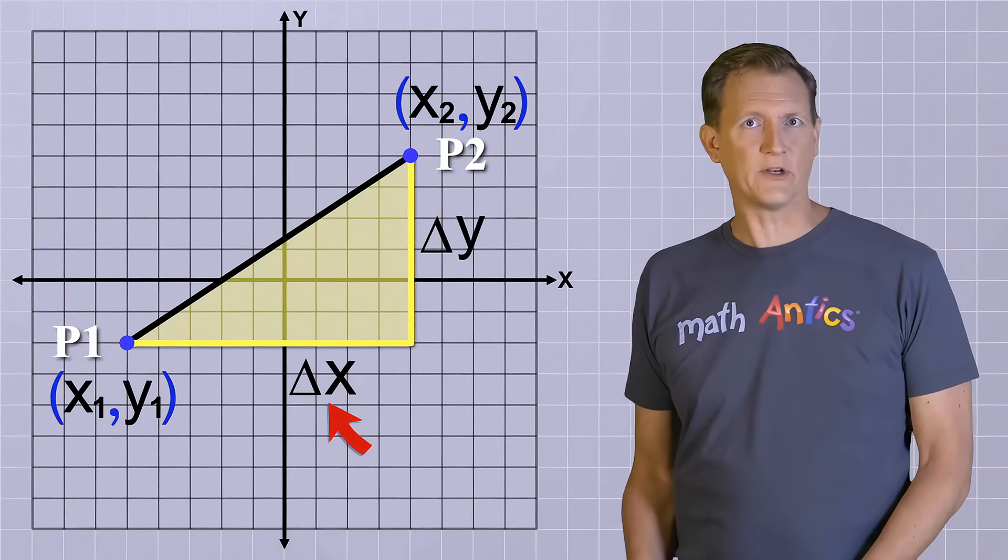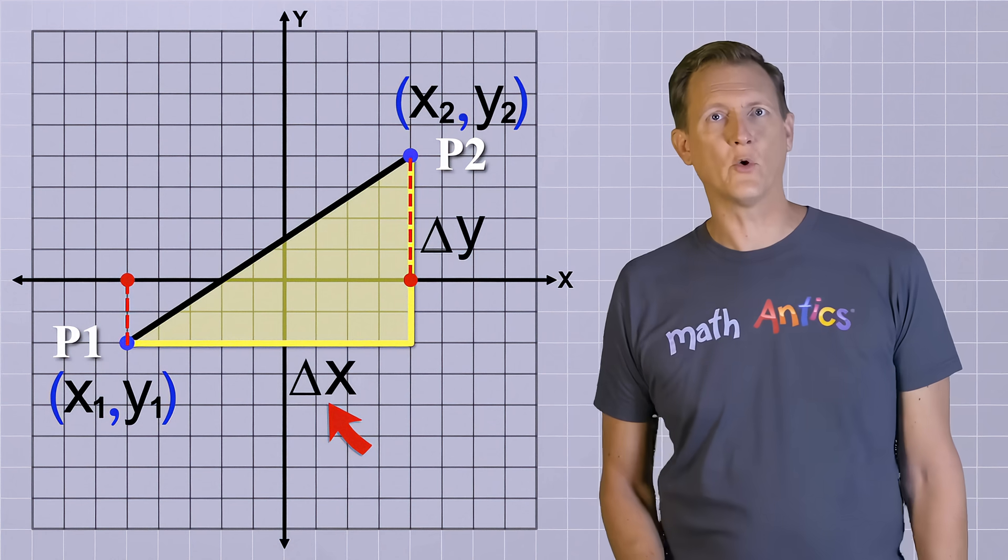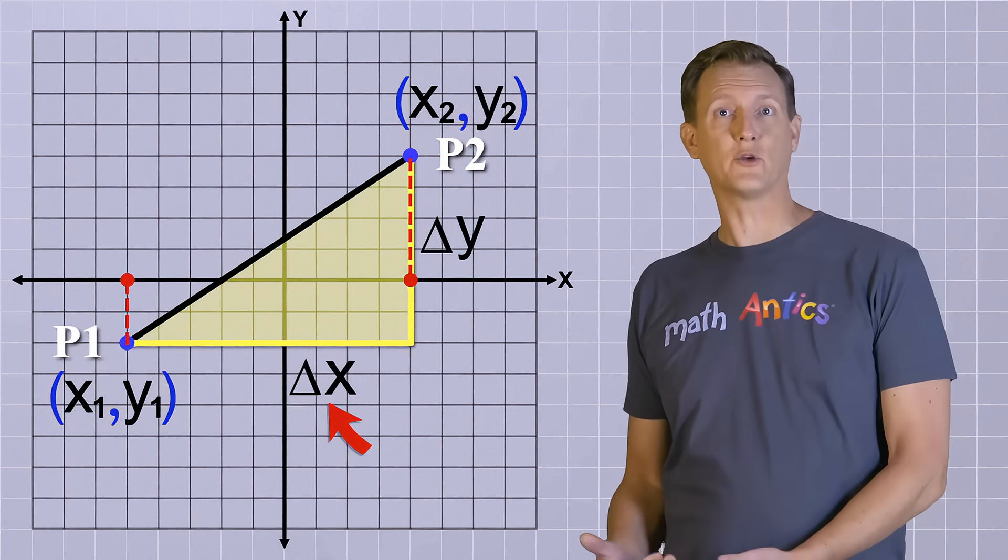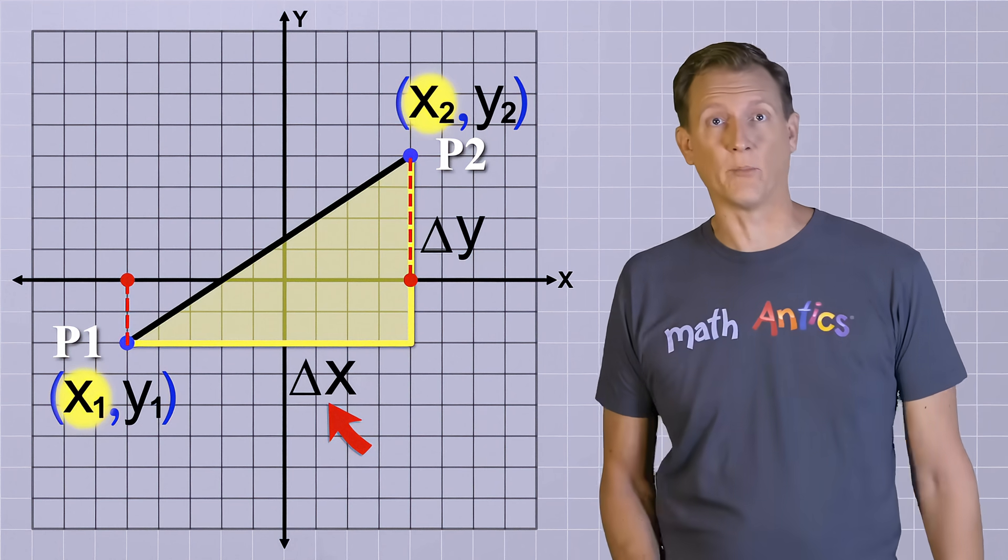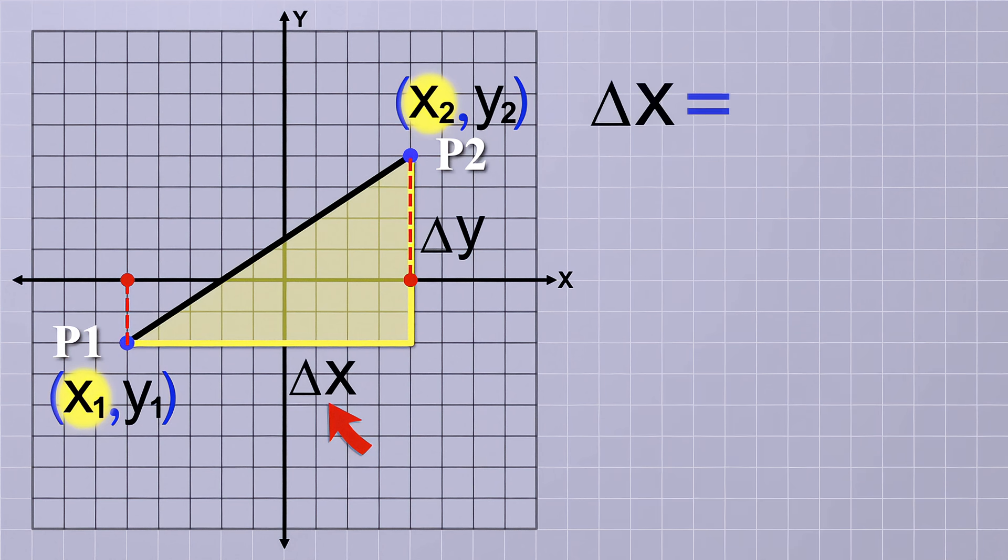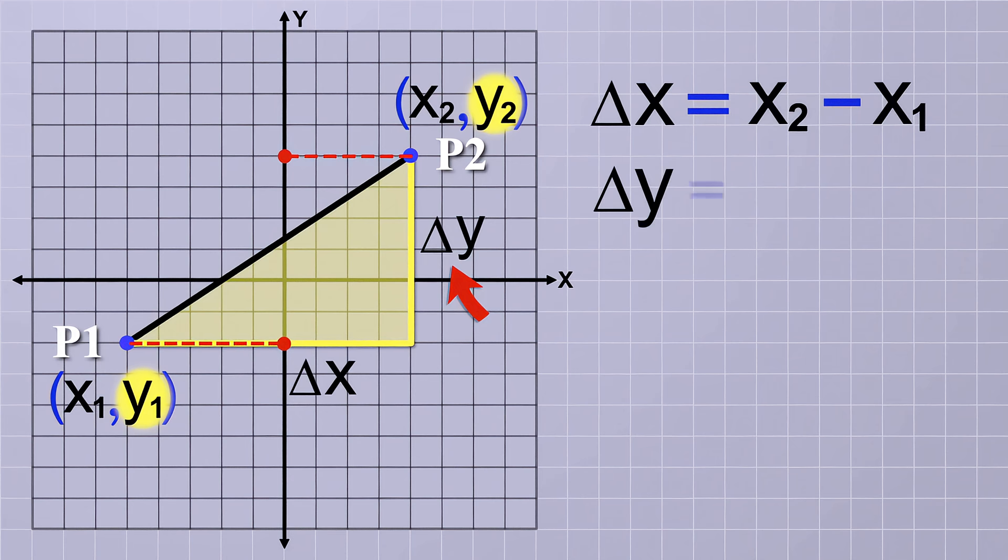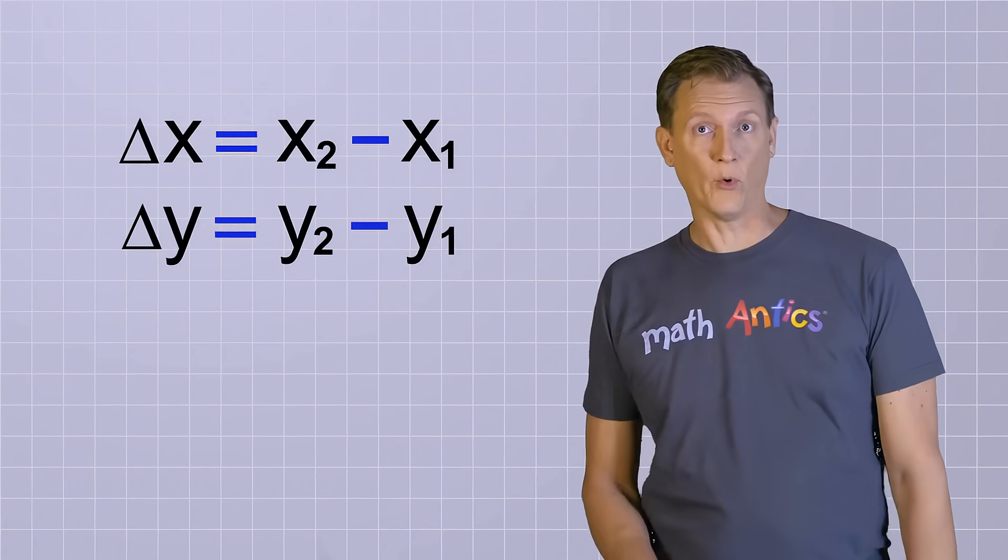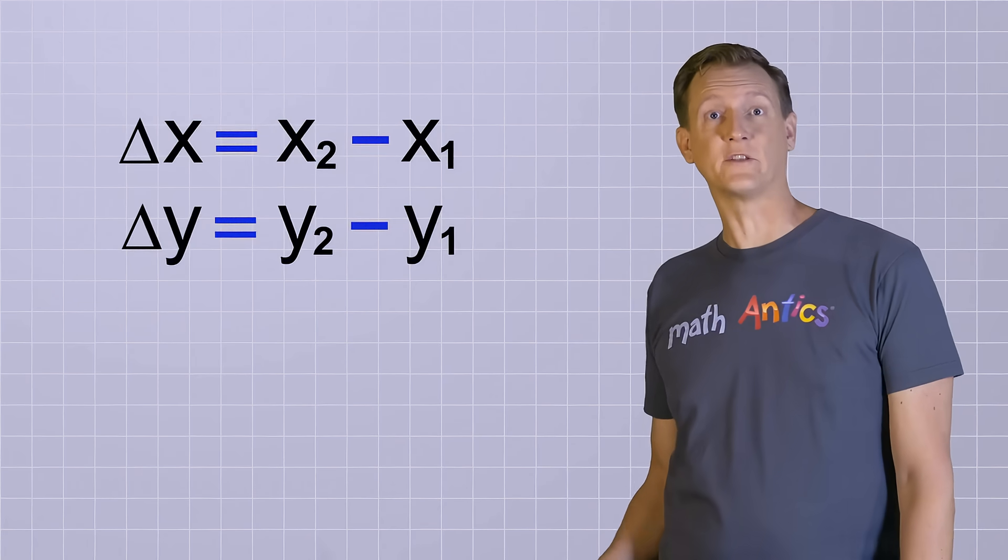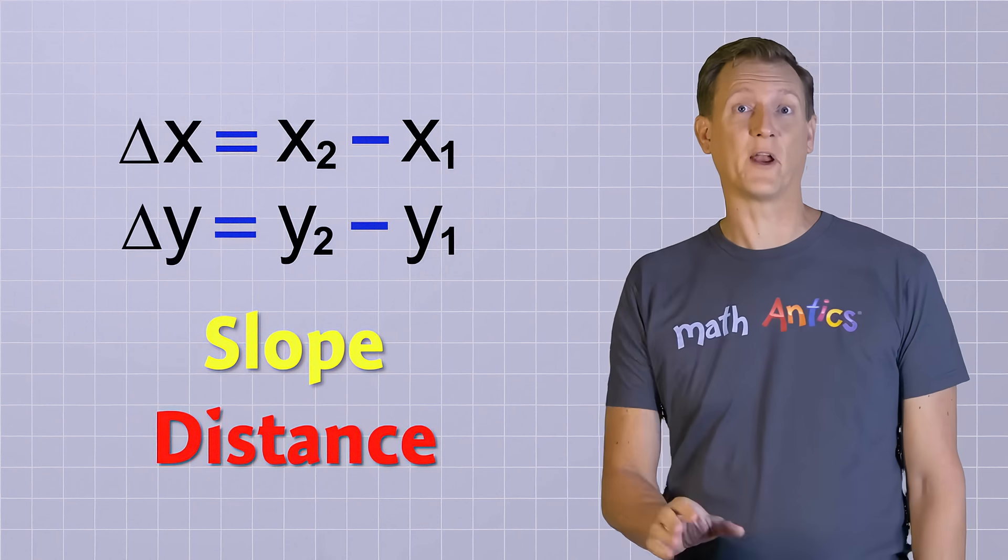Anyway, to calculate the delta x, you need to find the difference between the x-coordinates of the two points. In other words, you need to subtract the x-value of the first point from the x-value of the second point. So, delta x equals x2 minus x1. Likewise, to calculate delta y, you need to find the difference between the y-coordinates of the two points. So, delta y equals y2 minus y1. These simple equations for finding delta x and delta y are important because they're used in the equations for slope and distance, which is what I want to show you now.